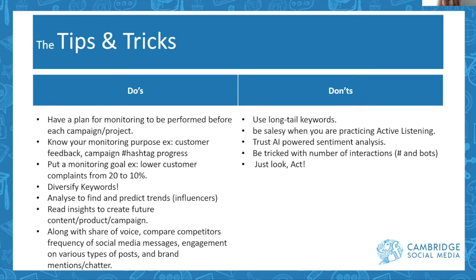The goal is also important. For example, if your goal is to see what customers are saying about you and the feedback is mostly negative, you should have a measurable specific goal — such as lowering complaints from 20% to 10%, or increasing positive customer feedback from 50% to 60%. It has to be scalable and measurable, and it's a really good way to know where you're going.